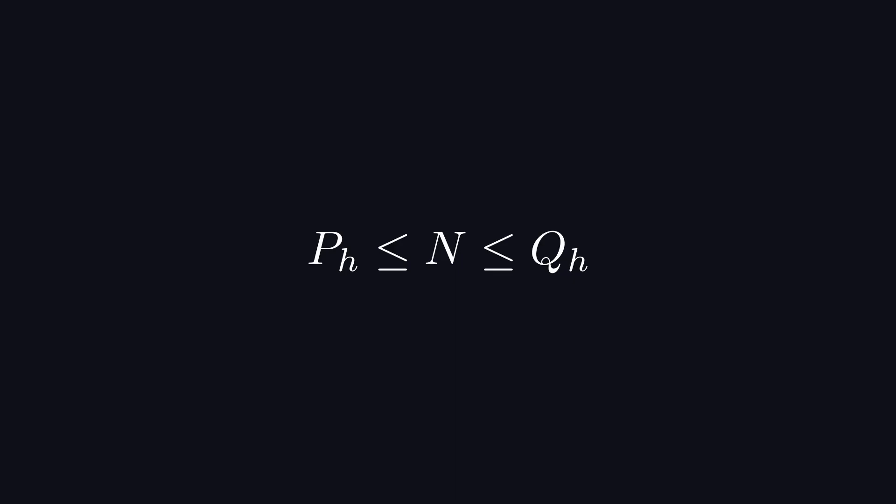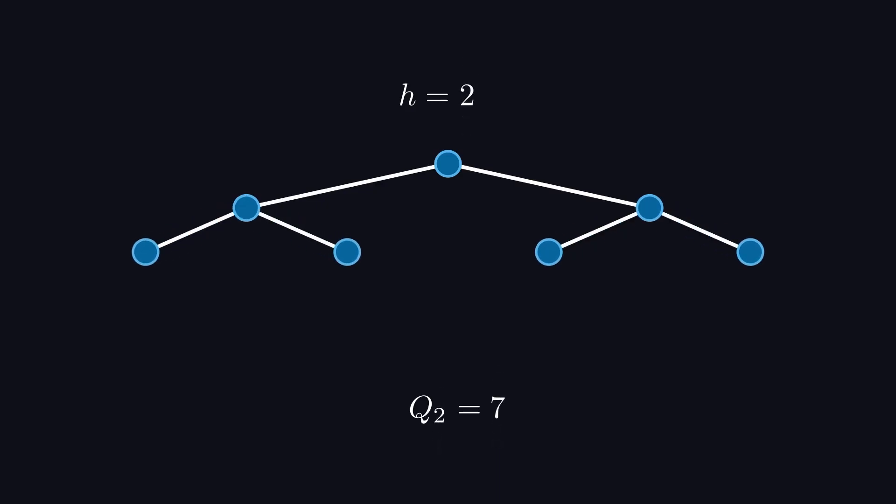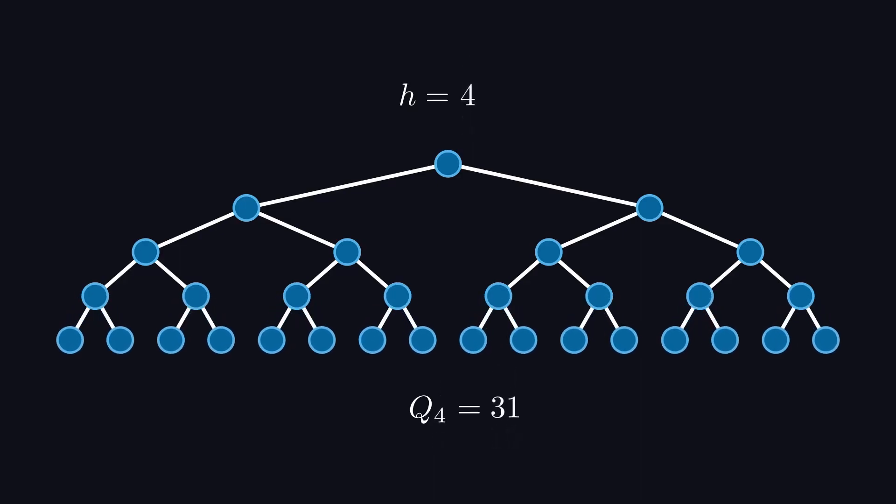Let's start with the maximum because it's the easier of the two to find. We start with an empty tree, which we know has a height of negative 1, and its maximum size is 0. Once we add a node, its height becomes 0 and its maximum size is 1. For h equals 1, since we want to give this tree as many nodes as possible, we'll give the root node 2 children, making the tree's size 3. For h equals 2, we can give both of these leaf nodes 2 children for a total of 7 nodes. We'll repeat this again to get a tree of height 3, with its maximum possible size of 15. It's pretty easy to see that if we make every non-leaf node have 2 children, the tree will have the maximum number of nodes. But how many is this?